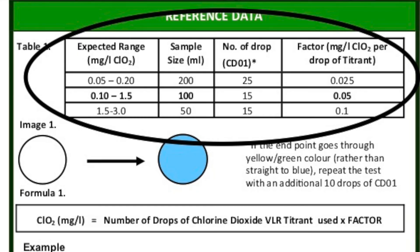The chlorine dioxide concentration is calculated by multiplying the number of drops by the factor based on the table shown. For example, 10 drops of VLR titrant times a 0.05 factor equals 0.5 ppm as ClO2.